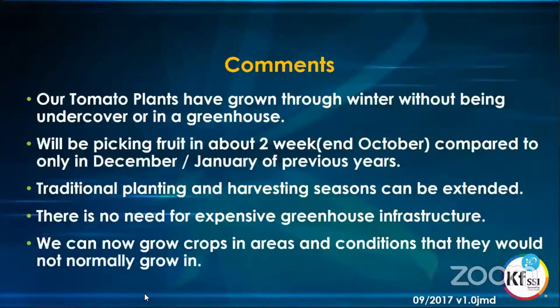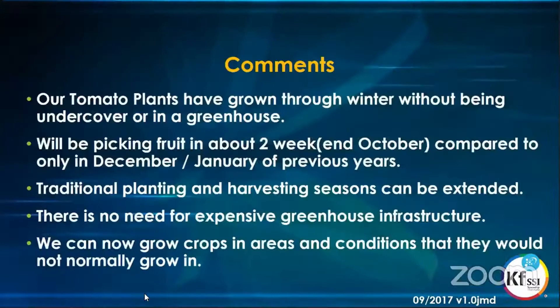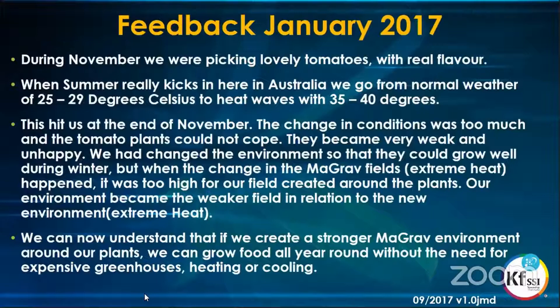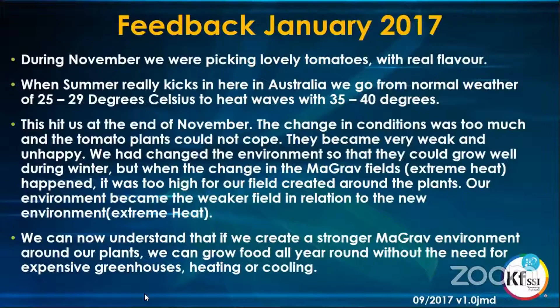Our comments on that were that these plants had grown through winter without being undercover in a greenhouse. We would have been picking the fruit at the end of October compared to maybe December and January of previous years. This showed us that traditional planting and harvesting seasons can be extended on either side of your traditional growing seasons, and there's no need for expensive greenhouse infrastructure. The interesting feedback was the plant continued to grow during December and we were picking lovely tomatoes. Then as Australian summer hit with a hot period of over 40 degrees for at least a week, this was just too much for the plant to cope with, and within two weeks the plant had died.